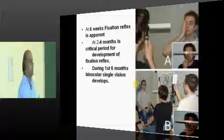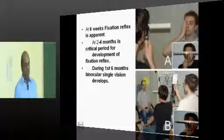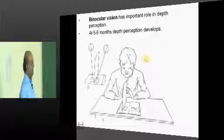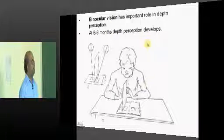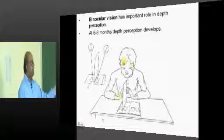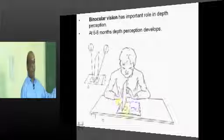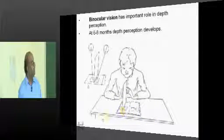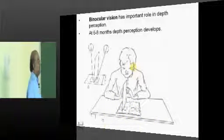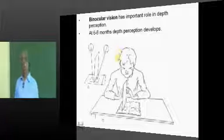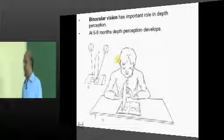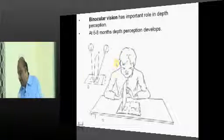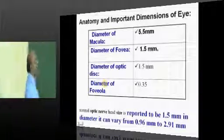During the first six months, binocular vision typically develops — where both eyes coordinate with each other, which is very important for us to perceive depth. At six to eight months, the perception of depth will be developing, which is what needs to be fundamentally remembered.